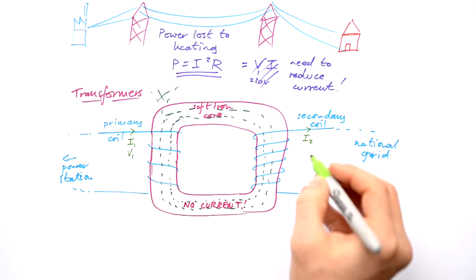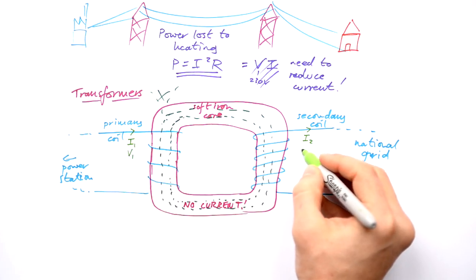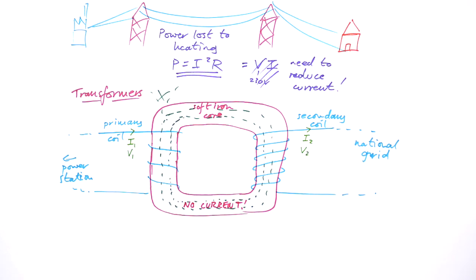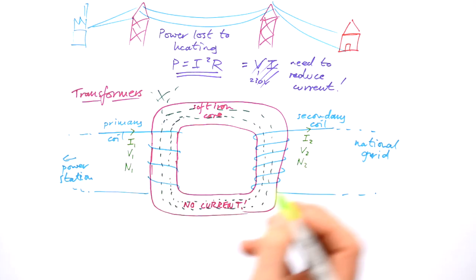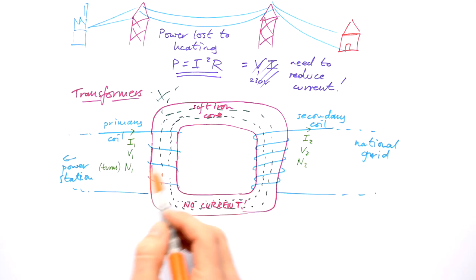We have a certain voltage in the primary coil and a certain voltage in the secondary coil, inducing the secondary coil as well. And also, we have the number of turns around the coil. How are these things related to each other?